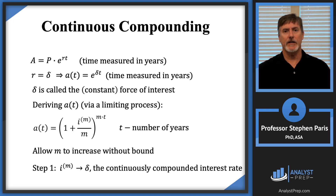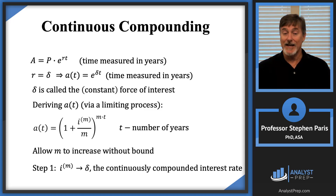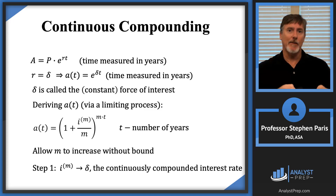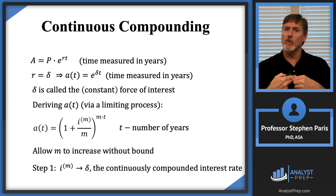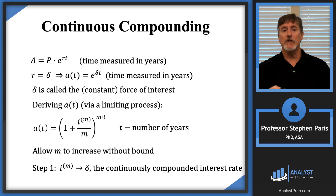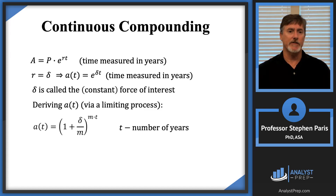The first step is to consider what happens to i-upper-M as M goes to infinity. That's just some number I'm going to call delta — the same delta I've already used — thought of as the continuously compounded interest rate. i-upper-M is the nominal annual rate compounded M times per year. If you plug in infinity, you're compounding continuously, and that's what we call delta. So I'm going to replace i-upper-M by delta, getting 1 plus delta over M raised to M times T.